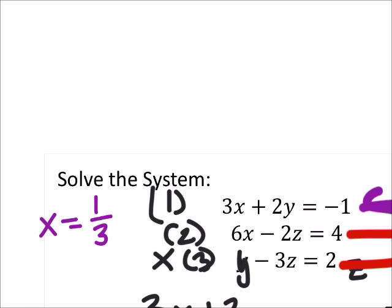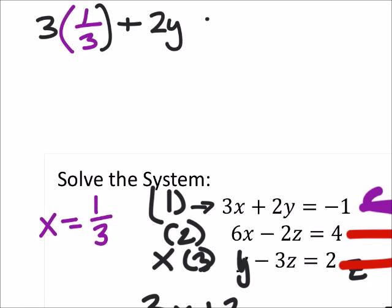So you see these other two, like this equation here at the top. If I replace the X with the one-third, I could solve the equation for Y pretty easy there. Let's set that up. We got a three. It's times X, which is one-third. That's what we think it is anyways, because we're going to check. Plus two Y equals negative one. Alright. Well, what is three times one-third? That's one.